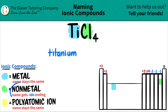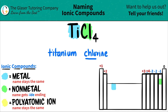Chlorine comes next. The non-metal, which is what chlorine is, that name always gets the -ide ending. So it was chlorine, but now it's going to turn into chloride. Drop the -ne and add the -de — there's the ide ending.